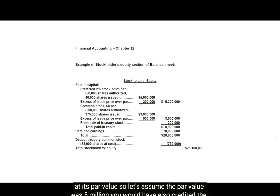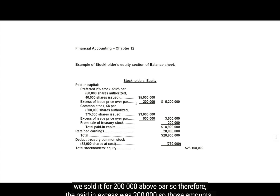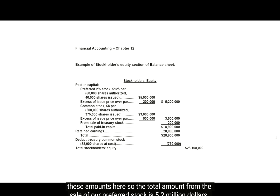So let's assume the par value was $5 million. You would have also credited the paid-in excess account for anything above that $5 million that you sold it for. So let's assume that we sold it for $200,000 above par, so the paid-in excess was $200,000. Those amounts would have just been from our journal entries — we would have posted them to our ledgers to get these amounts here. So the total amount from the sale of our preferred stock is $5.2 million.